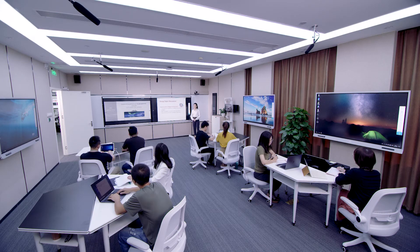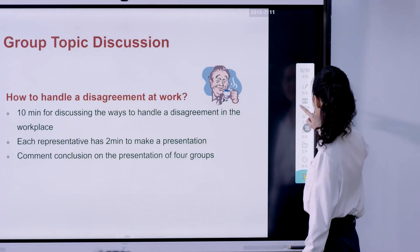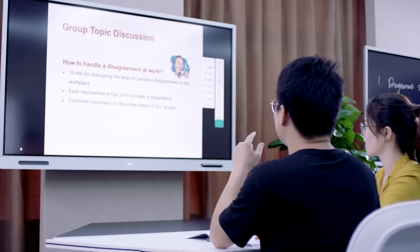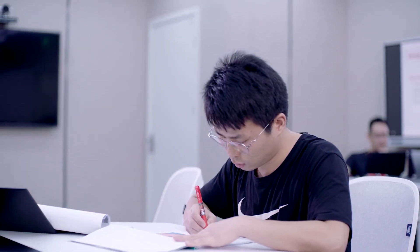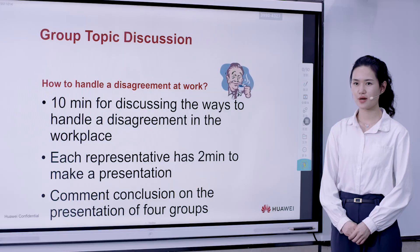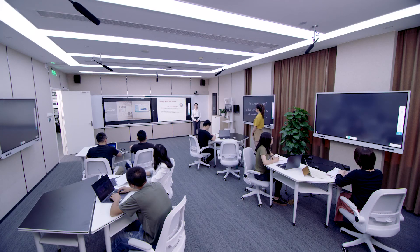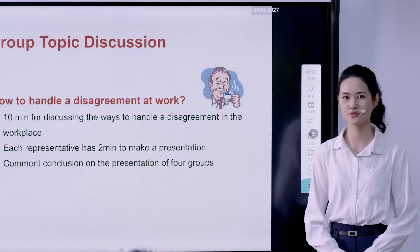During the class, the assistant supports the teacher in disseminating topics to each group's screen. After receiving the discussion materials, the four groups of students can discuss the topics freely using any annotation tool on the whiteboard. After the discussion, the representative of group 3 stands up to share the team's ideas about a topic. The teacher can then broadcast the presentation of group A to the other three groups, so all groups can view it on their own screen.